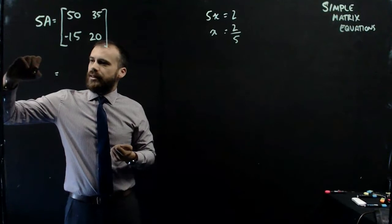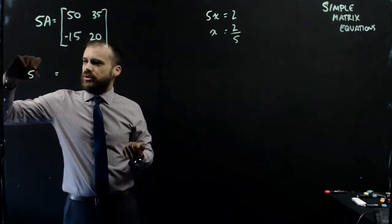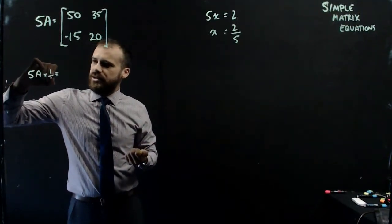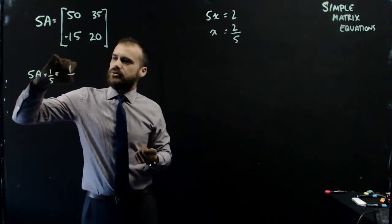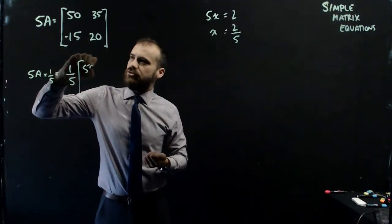So now I can say... We'll do it on both sides just so I'm clear. 5A times 1 fifth equals 1 fifth times that matrix.